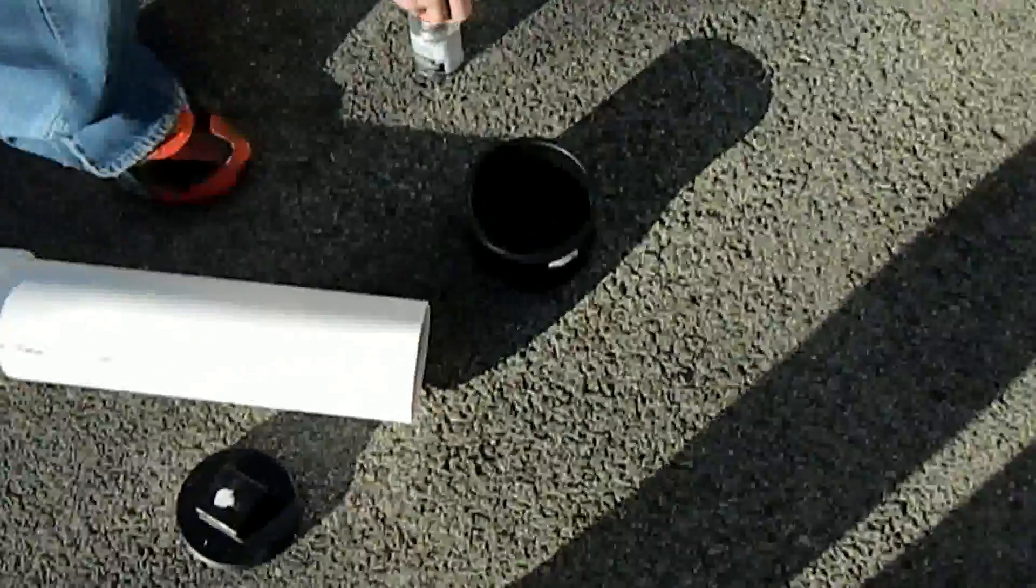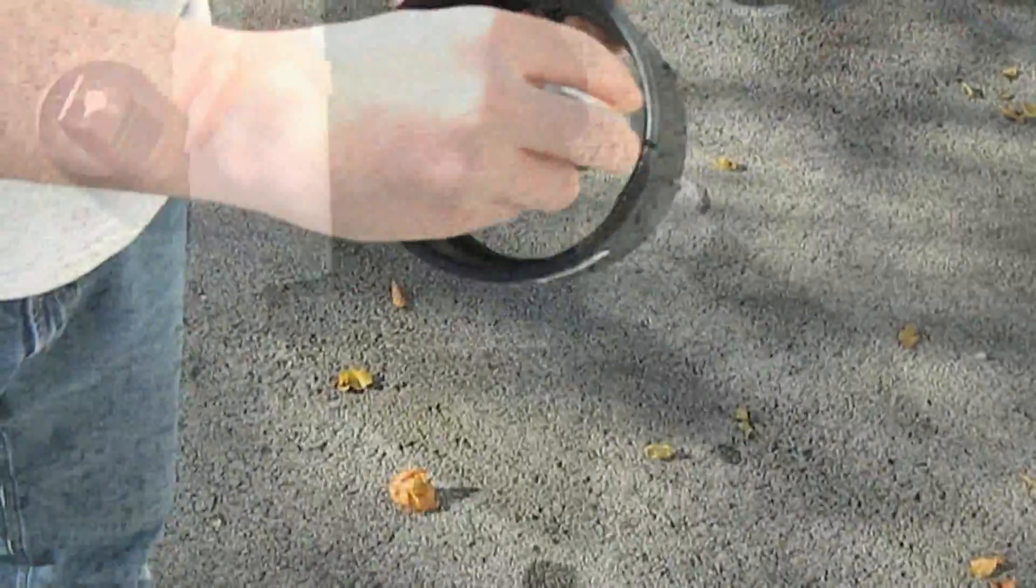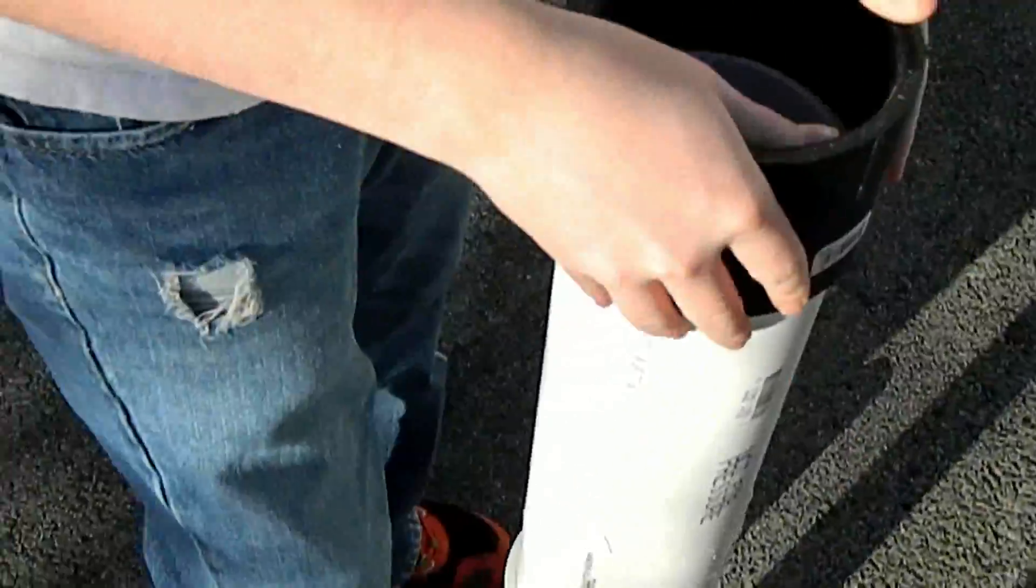Get some more PVC cement and put it on the inside of the coupling, and place that on the 4 inch PVC.